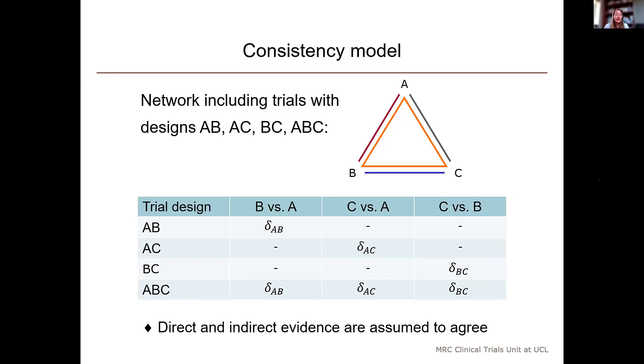If we fit a consistency model to these data, we assume that the underlying treatment difference between A and B is the same in the two-arm AB trial as it is in the three-arm ABC trial. And we make similar assumptions for the other two pairwise comparisons.